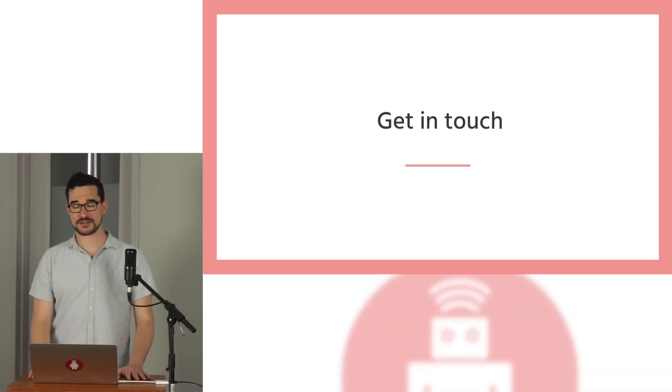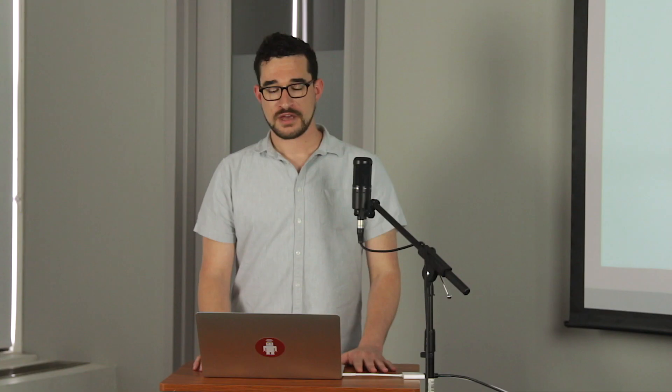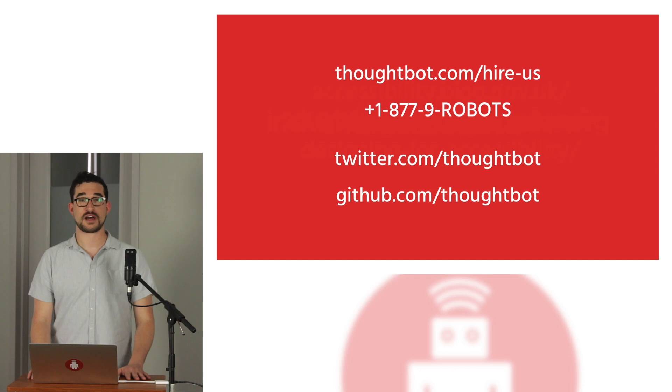Hopefully, you now have a better understanding of what digital accessibility is and how important it is for your organization. If you are interested in exploring how to put what I've discussed today into practice, I'd love a chance to chat. You can reach us from our website, thoughtbot.com, via our phone number 877-9-ROBOTS, or via Twitter or GitHub. Thank you for taking the time to tune in, and I hope we get a chance to chat soon.